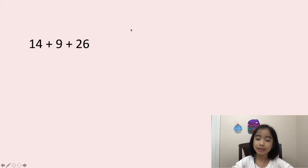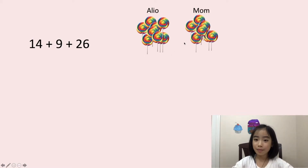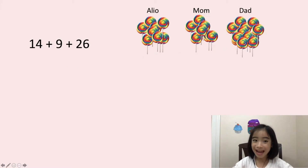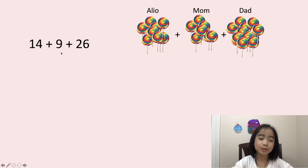Let's illustrate this expression. Here, myself, Aliyo, has 14 lollipops. My mom gives me 9 lollipops. My dad gives me 26 lollipops. When we add the lollipops together, we get the sum of the expression.